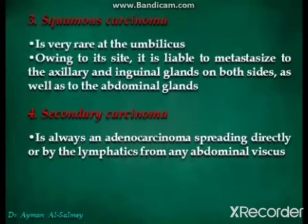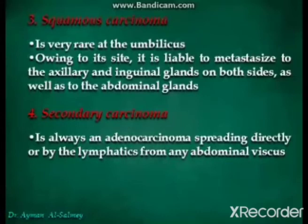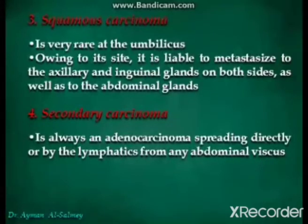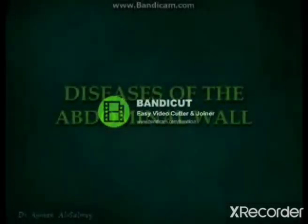The second group of umbilical tumors is endometrioma, which occurs in middle-aged females as a small painful flesh-colored tumor at the bottom of the umbilicus; treatment is by excision — umbilicectomy. The third type is squamous carcinoma, which is very rare at the umbilicus, but owing to its site is liable to metastasize to the axillary and inguinal lymph nodes on both sides as well as to the abdominal glands. The fourth type is secondary carcinoma, which is always an adenocarcinoma spreading directly or by lymphatics from an abdominal viscus.